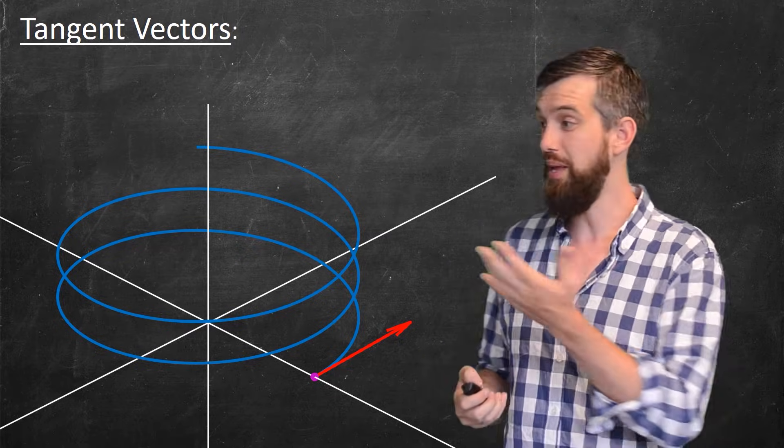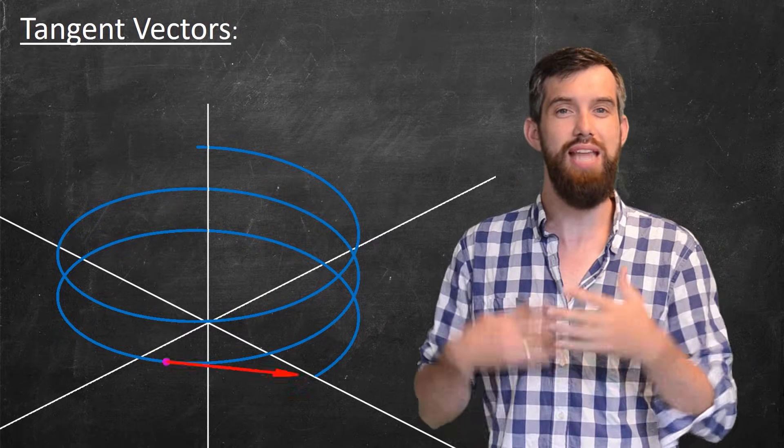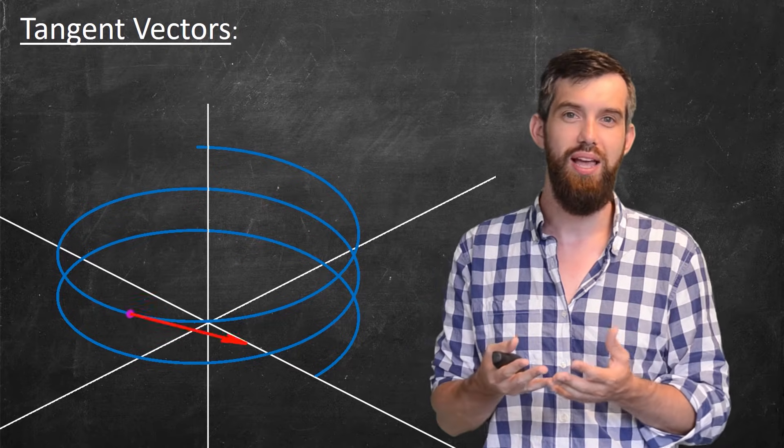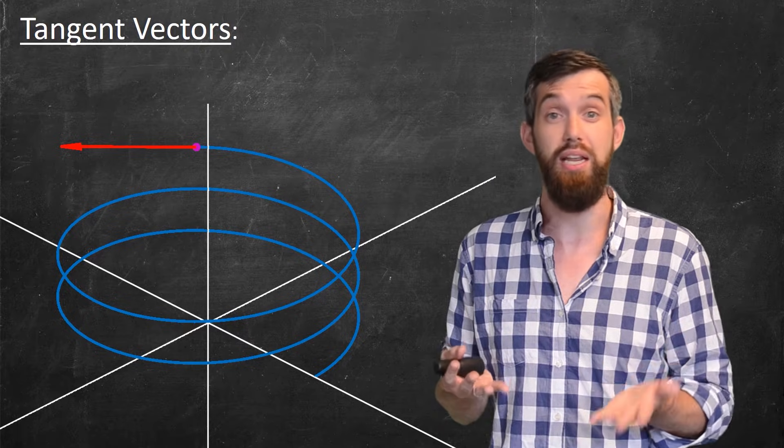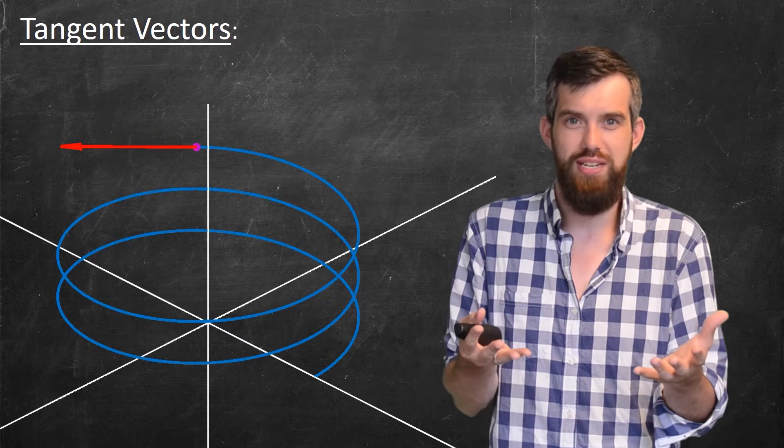If I then allow my t to increase, my point goes around the helix, but so does the tangent vector always pointing in the direction where my curve appears to be going. It goes around and around the circle, and it's always pointing just a little bit up because my helix is indeed increasing. So that's sort of visually what I'm hoping for in a tangent vector.